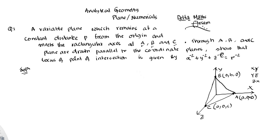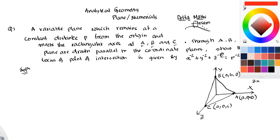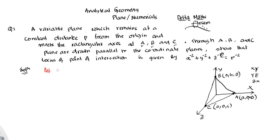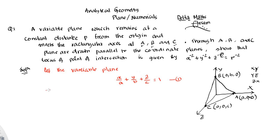Look at the solution. Let the variable plane be in intercept form of plane: x/a + y/b + z/c = 1. This is the variable plane. The plane meets the coordinate axes at points A(a,0,0), B(0,b,0), and C(0,0,c).